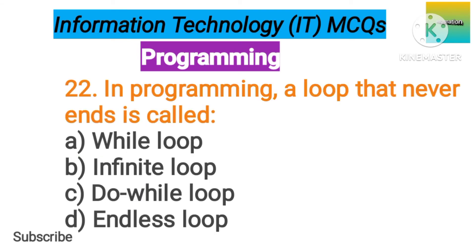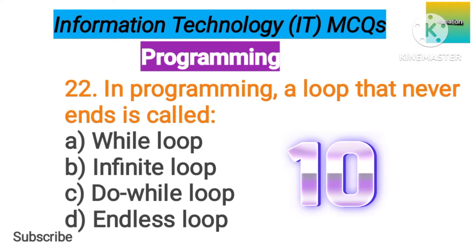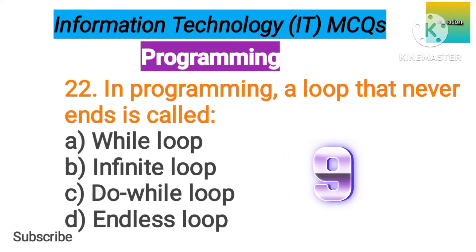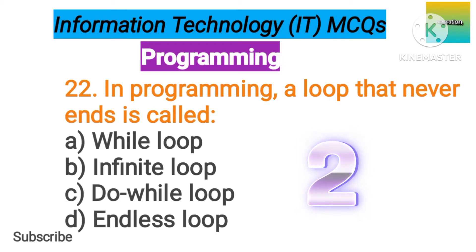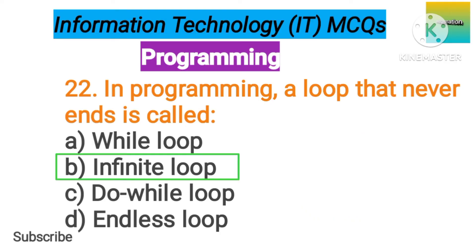Number 22. In programming, a loop that never ends is called option A: While loop. B: Infinite loop. C: Do-while loop. D: Endless loop. The correct answer is option B, Infinite loop.